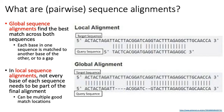In local sequence alignments, you're not trying to match all of sequence X to all of sequence Y — you might only want to find partial matches. This is useful for aligning two very distantly related genomes, like human and yeast, where you don't expect a direct correspondence between chromosomes. Local alignments can also find multiple good match locations, such as in long read sequencing where you want to find parts of a read that match parts of a target genome.